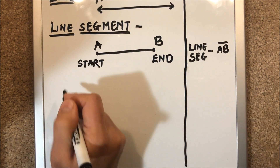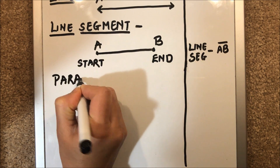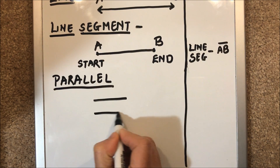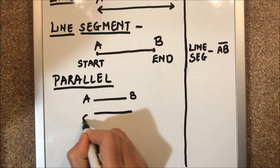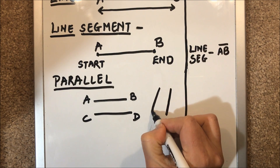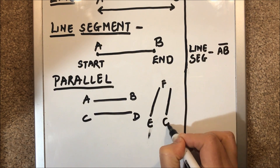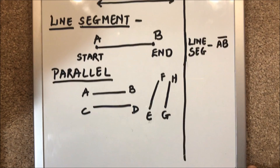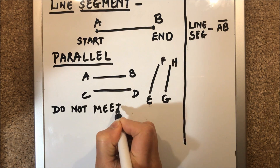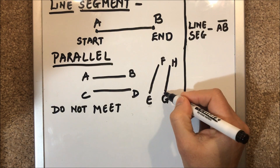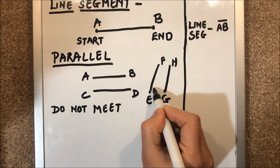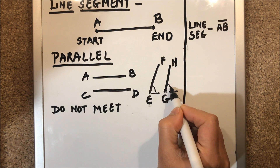Next we have parallel lines. Lines are said to be parallel when they do not meet. These two lines AB and CD are parallel lines, as are EF and GH. One more quality of parallel lines is that they are always inclined at the same angle. So the angle that EF makes with the base should be equal to the angle GH makes with the base.